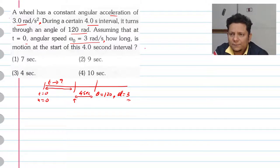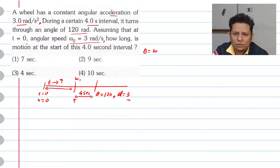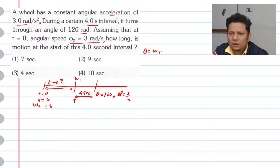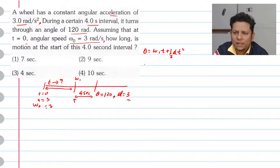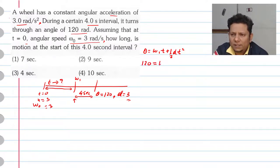Toh second equation humari kehti hai: theta is equal to omega not — yahan par isko omega 1 keh lete hain — omega not, kyunki inhone isko kaha hua hai omega not. Achi, iski value 0 nahin, yahan par 3 di hui hai, toh omega not 3 ho gaya. So omega 1 multiply — formula likhte hain: plus half alpha t square. Yeh aapki second equation mein apply kar rahe hain. Theta ki jo value hai woh apne ko di hui hai: 120 is equal to omega 1 — humein nahin pata, iski value humen nikalni hai — multiplied by time taken aapka 4, plus half multiplied by alpha, uski value 3, multiplied by 4 ka square.